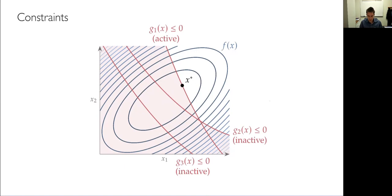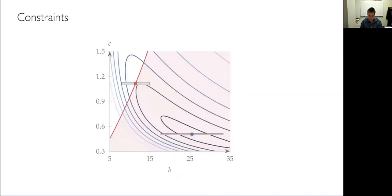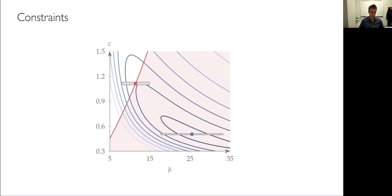Going back to the wing problem — we had that silly unconstrained solution. Now we've added a stress constraint to ensure the wing won't break under load. The design moved over and of course has more drag, but it's feasible — it's not going to break and will carry the loads needed during flight. That's always the case with active constraints: we give something up in the objective. But constraints are actually freeing — without them we had a useless solution. By adding constraints, we make it possible to find a useful solution.